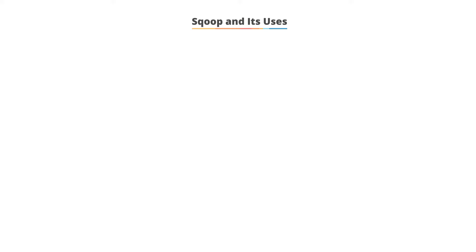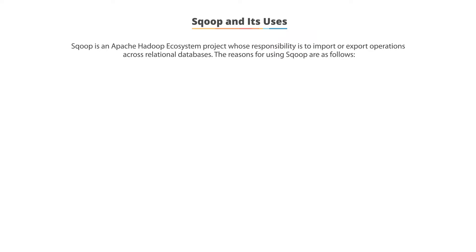Sqoop and its various uses. Sqoop is an Apache Hadoop ecosystem project. Its responsibility is to import or export data via operations across relational databases, such as MySQL, MSSQL, and Oracle, to and from HDFS.